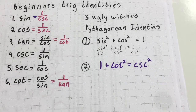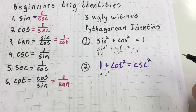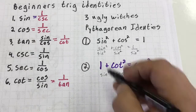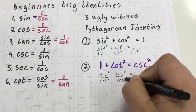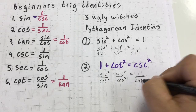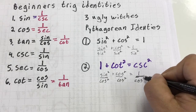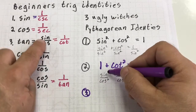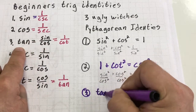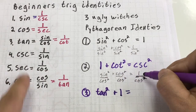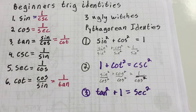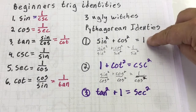For the third one, I'm going to do the same process — rewrite sine squared plus cosine squared equals one, but this time divide each term by cosine squared. Sine squared over cosine squared is tangent squared. Cosine squared over cosine squared is just one. And one over cosine squared gives me secant squared. So the third Pythagorean identity is: tangent squared plus one equals secant squared. Those are the three ugly witches, and how you can derive the other two when you commit the first one to memory.